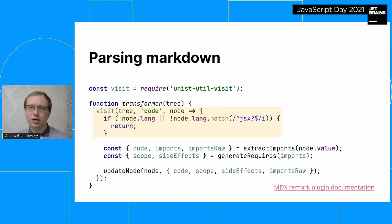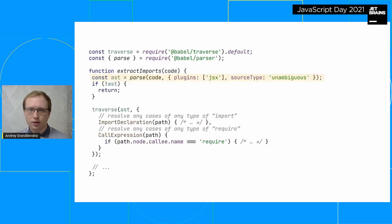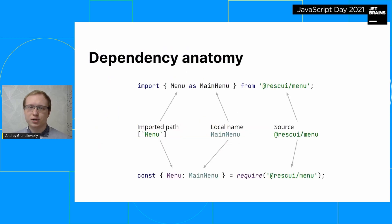Inside the plugin, we go through the AST and look for nodes of the code type — these are our examples. To distinguish usual static code blocks from playgrounds, the latter must have JS or JSX language specified. Next, we need to parse these examples and extract dependencies out of them. To parse the examples, we use the Babel parser with the JSX plugin. At the output we get the AST of the example, and in it we are interested in only two tokens: import declarations (ES6 imports) and call expressions with a require call name (CommonJS requires).